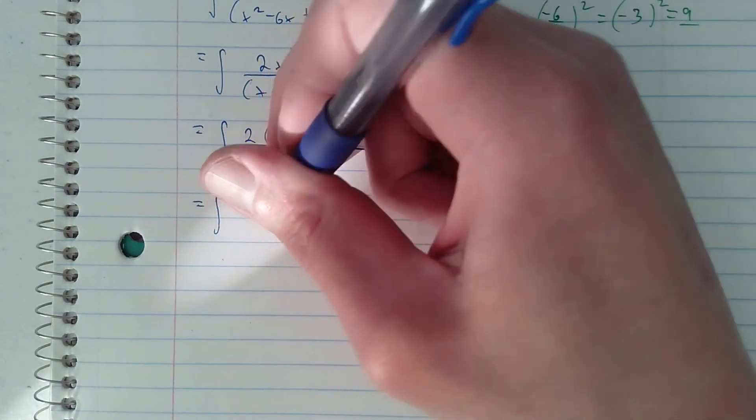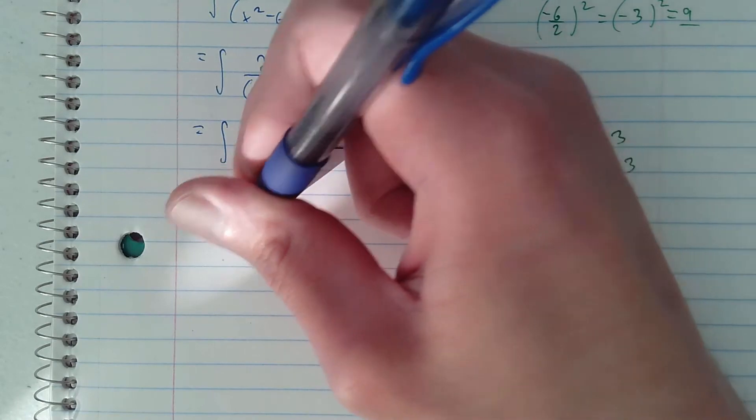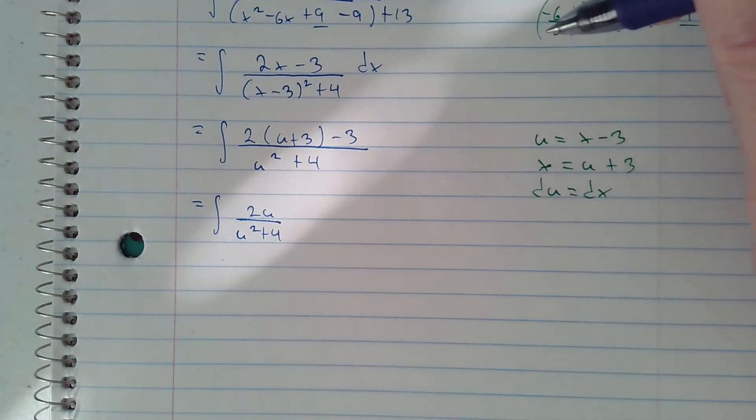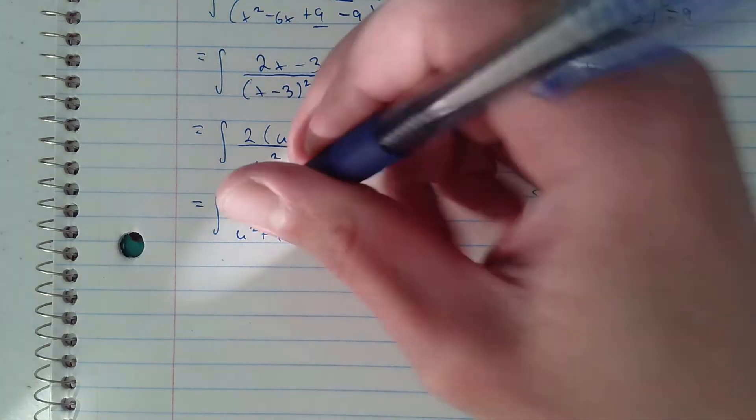So now we have 2u over u squared plus 4, du.